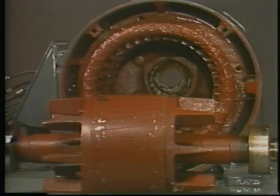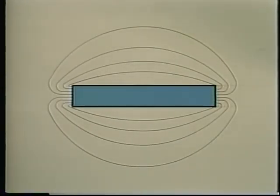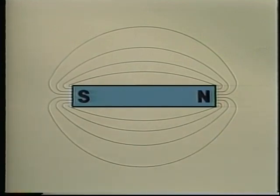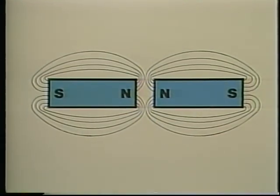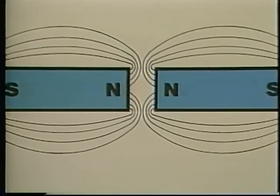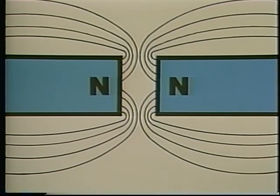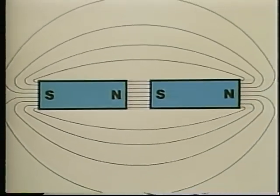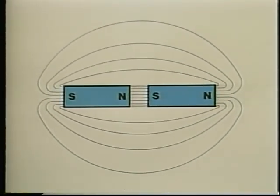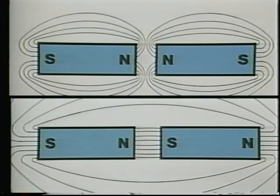Both the rotor and the stator are essentially magnets, and that's really the key to how a motor works. All magnets have a north pole and a south pole, produced by a magnetic force or field called magnetic flux. The flux passes through and surrounds the magnet. When you put two magnets together so that their north poles or south poles are together, the magnetic flux produces a force of repulsion — like poles are pushed apart.